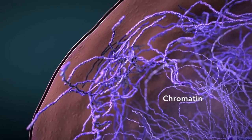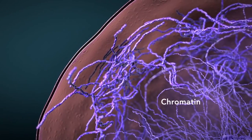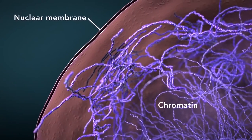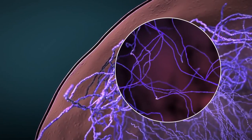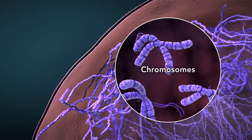Chromatin is the tangled spread out form of DNA found inside the nuclear membrane. When a cell is ready to divide, DNA condenses into structures known as chromosomes.